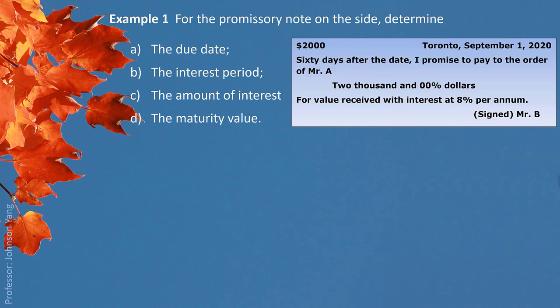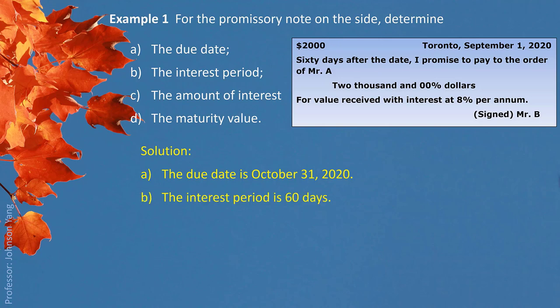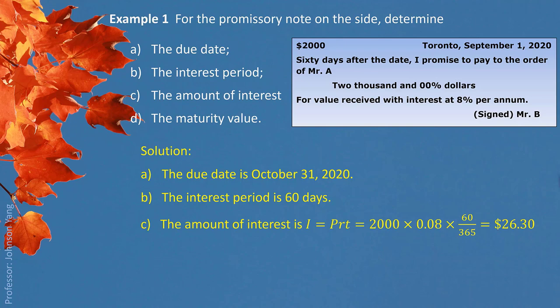Example 1: For a promissory note, determine the due date, interest period, amount of interest, and the maturity value. We have a $2,000 face value with issue date September 1, 2020, and a term of 60 days. That gives a due date of October 31, 2020. The interest period is clearly 60 days. Using the simple interest formula P×R×T, the amount of interest is $26.30. The maturity value is $2,000 + $26.30 = $2,026.30.